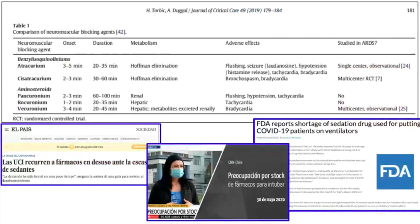Entre los relajantes musculares tenemos varios para elegir, con diferencias en su química y duración de acción. La mayoría de los trabajos en distrés respiratorio están hechos con cisatracurio, que no tenemos en Argentina, pero muy parecido a él es el atracurio — en cuanto a química y duración de acción, sería el de primera elección. En estudios que los compararon, aunque no específicos de distrés, tuvieron un perfil muy similar en efectividad como relajante y en perfil de efectos adversos. No se acumula ni en insuficiencia renal ni hepática porque se degrada directamente en plasma.